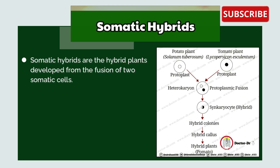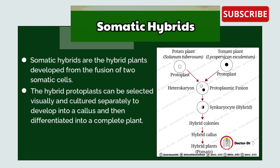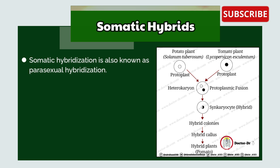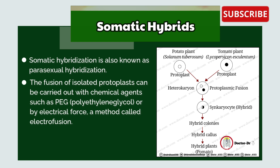Somatic hybrids are hybrid plants developed from the fusion of two somatic cells. The hybrid protoplast can be selected visually and cultured separately to develop into a callus, then differentiated into a complete plant. This type of hybridization of distantly related plants through sexual fertilization is never possible in nature. Somatic hybridization is also known as parasexual hybridization. The fusion of isolated protoplasts can be carried out with chemical agents such as PEG (polyethylene glycol) or by electrical force, a method called electrofusion.